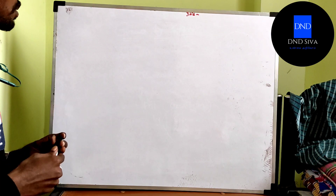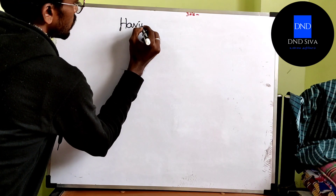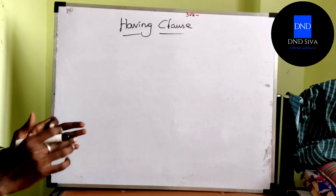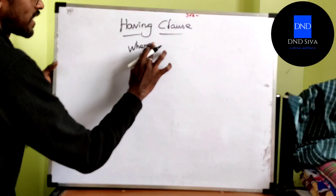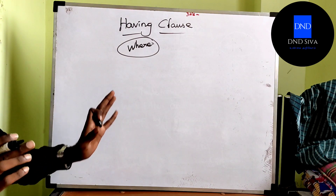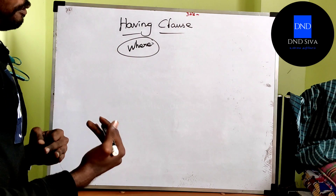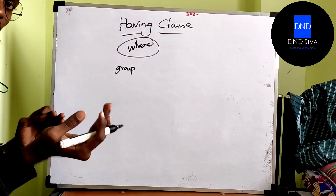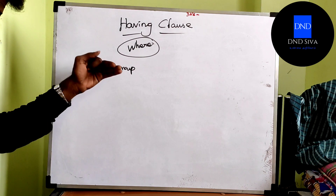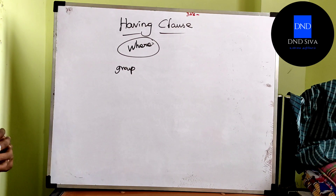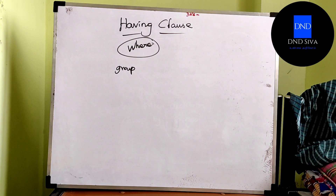Okay friends, we will talk about what we have in class. Having class — what is the meaning of having class? Having class is a type of WHERE clause. WHERE clause is a filter condition. Of course, having class is also a filter condition. There are some rules between the information. Having class is used to filter the group. If you have a group filter, you can use having class.